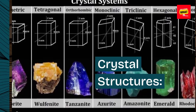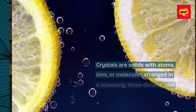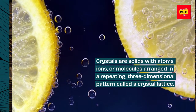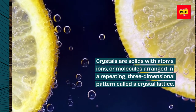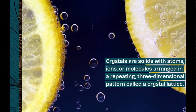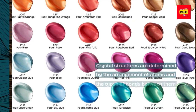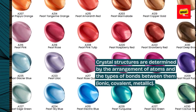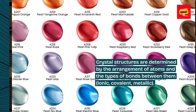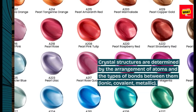Crystal Structures. Crystals are solids with atoms, ions, or molecules arranged in a repeating, three-dimensional pattern called a crystal lattice. Crystal structures are determined by the arrangement of atoms and the types of bonds between them: ionic, covalent, metallic.